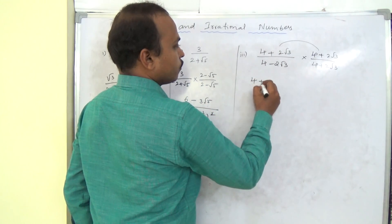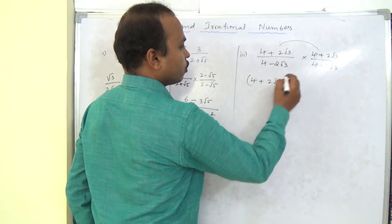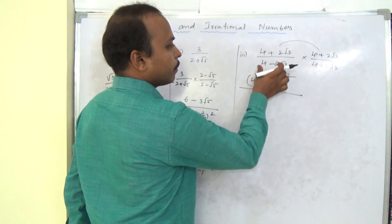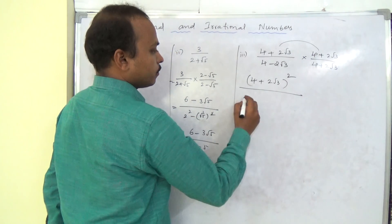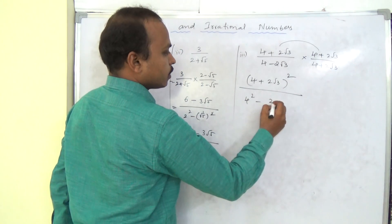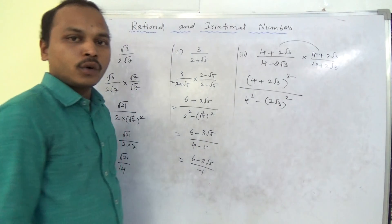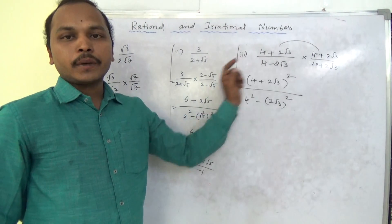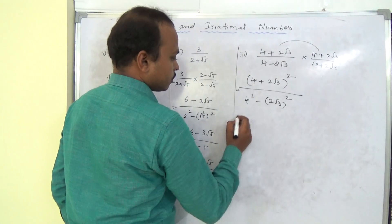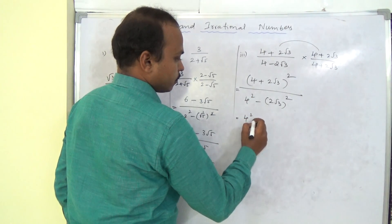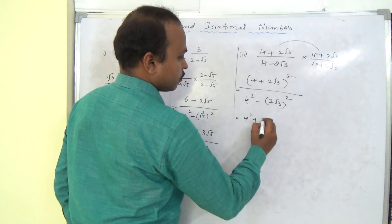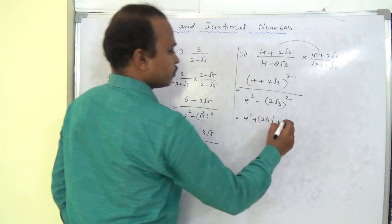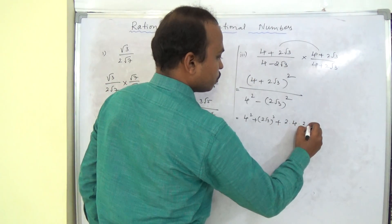The numerator becomes (4 plus 2√3) × (4 plus 2√3), which is (4 plus 2√3) whole square. Applying the a² + 2ab + b² formula: a² = 16, b² = (2√3)² = 4 × 3 = 12, and 2ab = 2 × 4 × 2√3 = 16√3. The denominator uses the (a − b)(a + b) = a² − b² formula: (4)² − (2√3)².